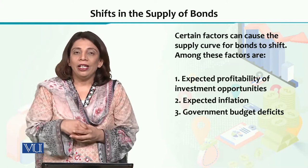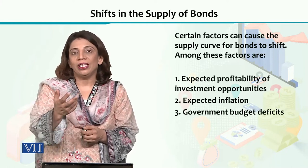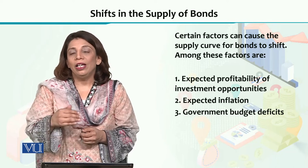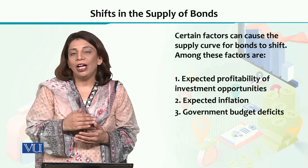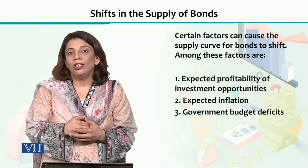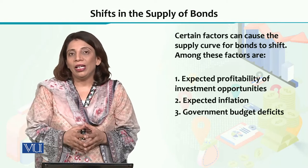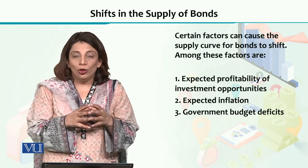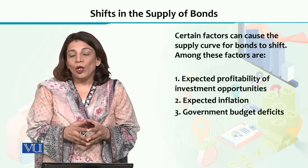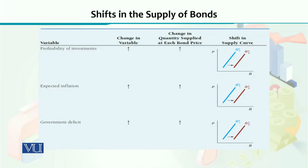Similarly, if we see that in the future inflation is going to increase or decrease, that also plays a significant role in increasing or decreasing the supply of financial instruments or bonds. The third important factor is that if the government's budget deficit will increase or decrease, that also causes the supply of bonds to forward or backward shift — increase or decrease.